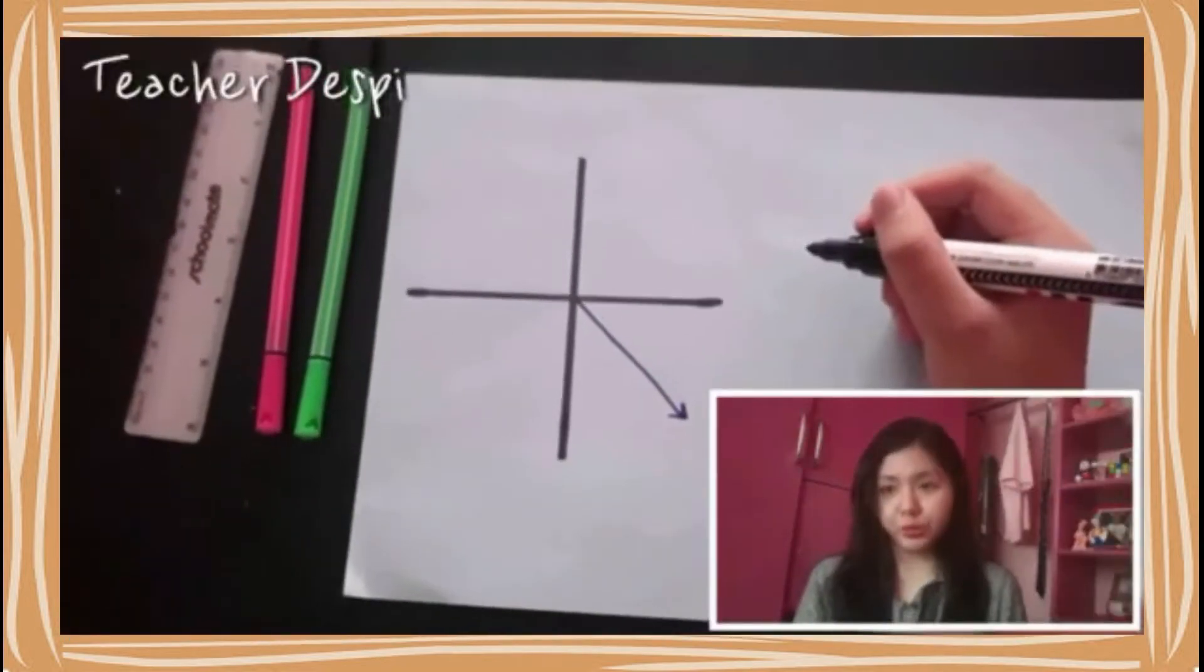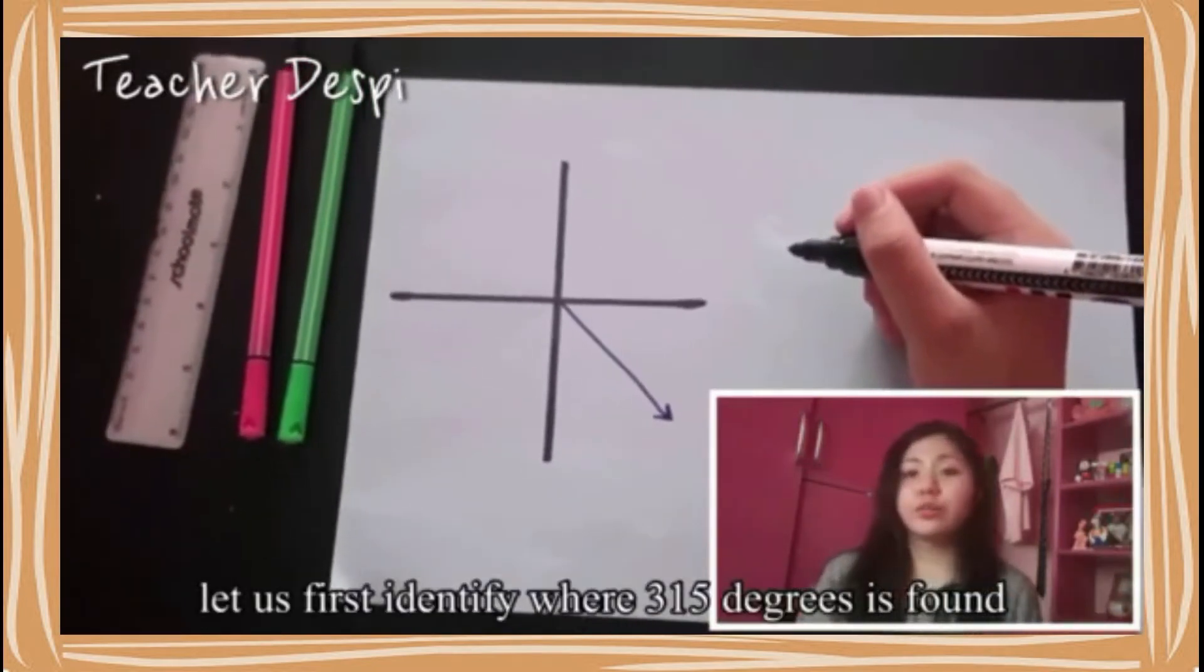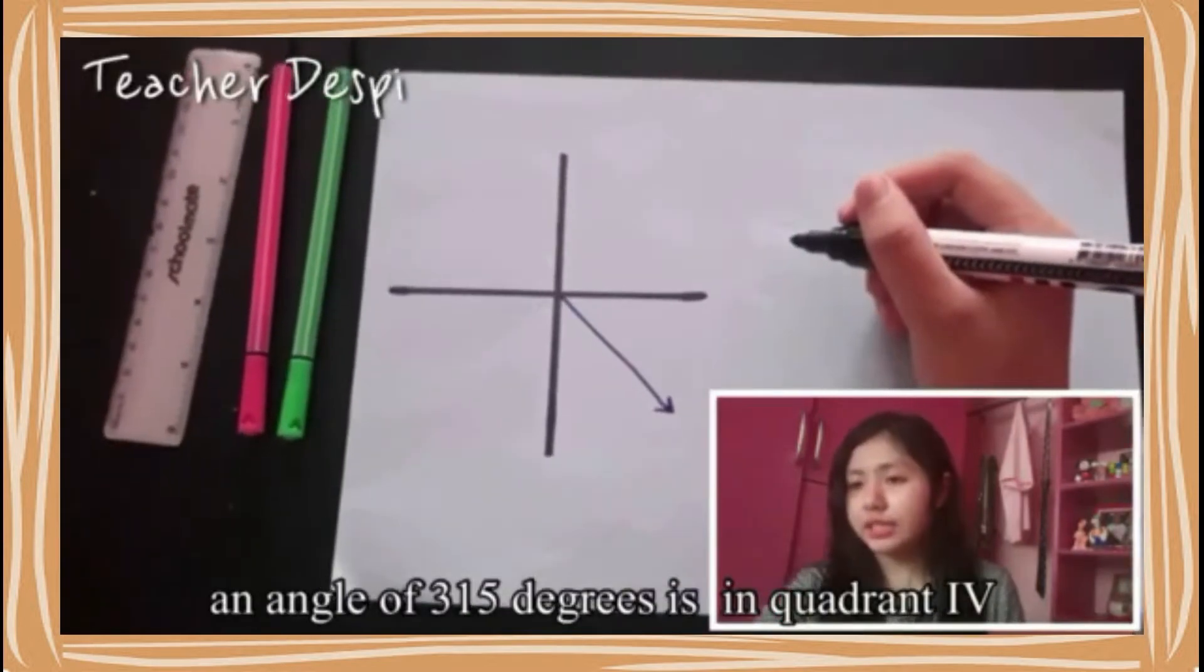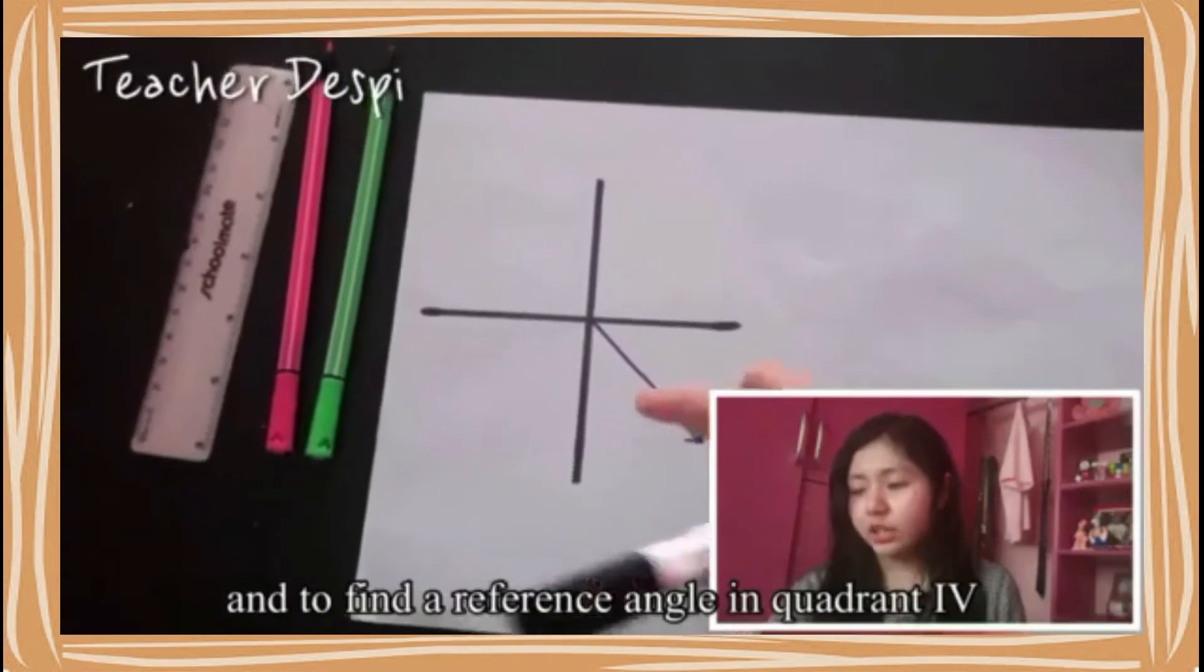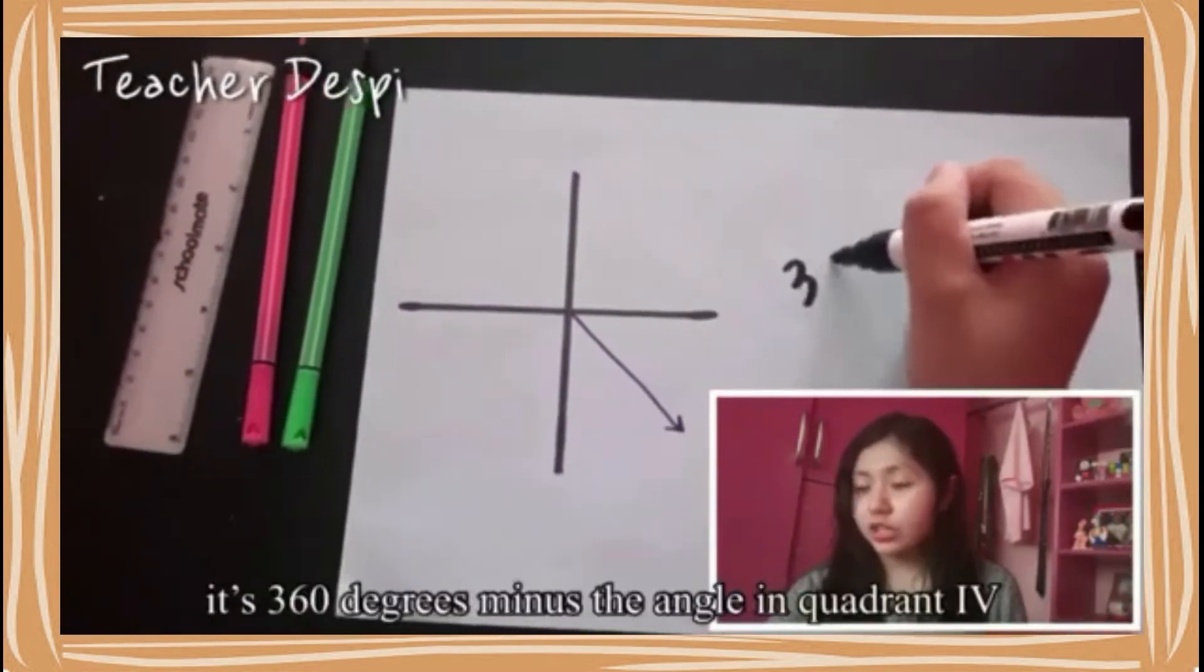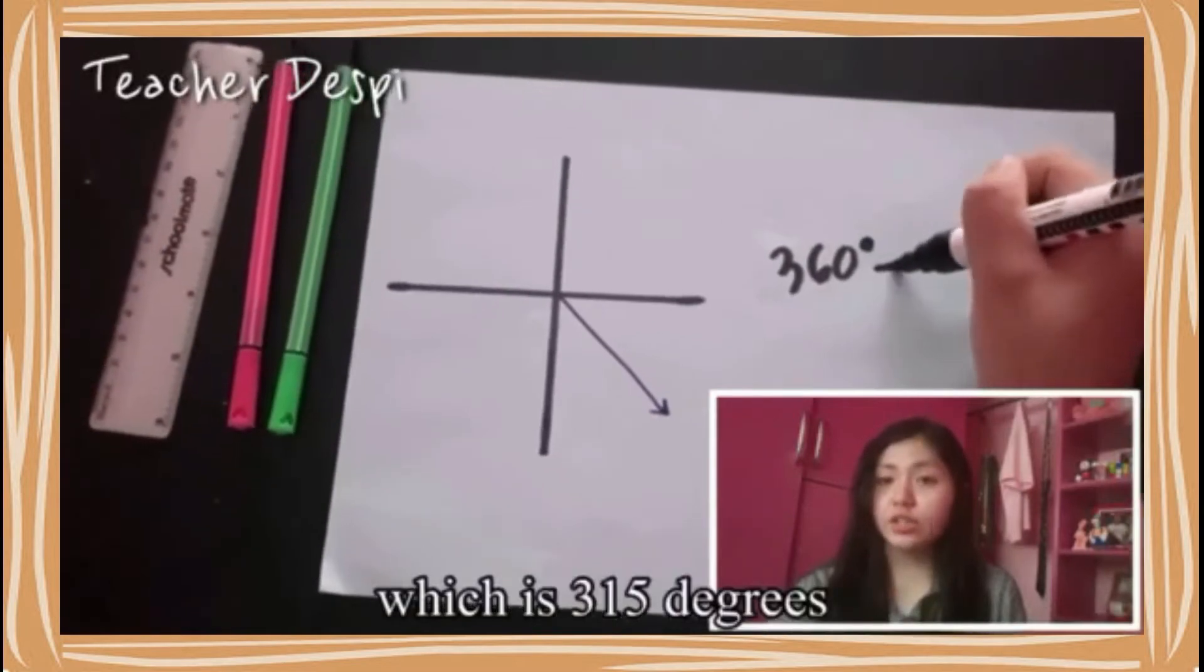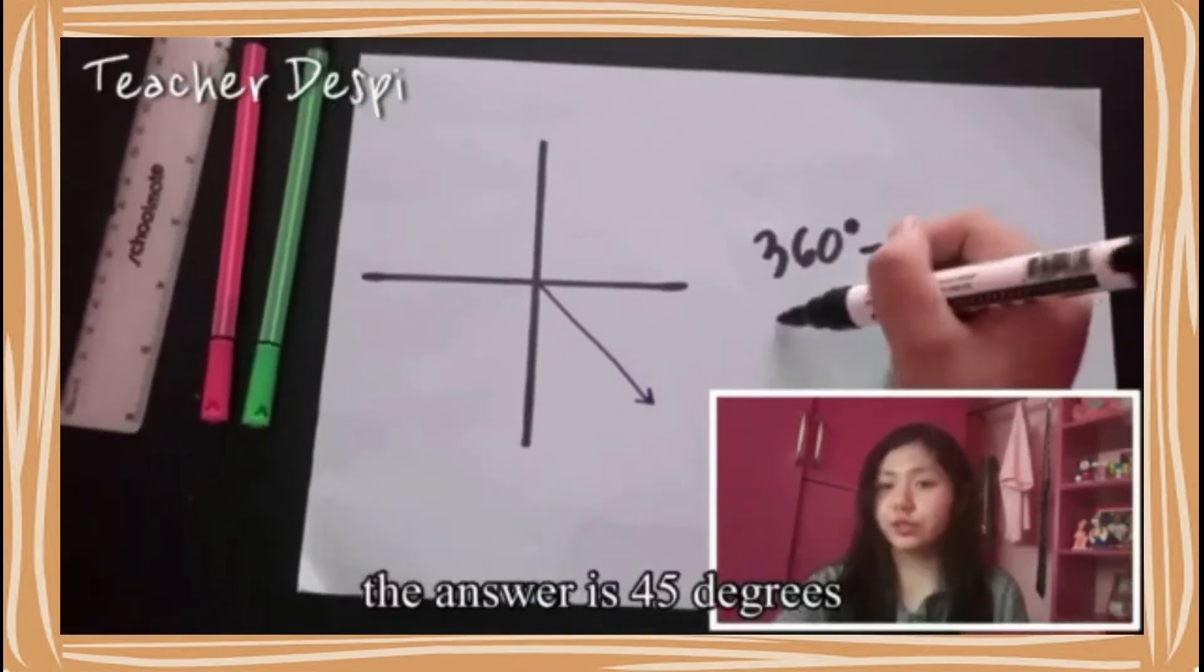Find the reference angle for 315 degrees. To find the answer, let us first identify where 315 degrees is found. An angle of 315 degrees is in quadrant 4. To find our reference angle in quadrant 4, it's 360 minus the angle in quadrant 4, which is 315 degrees. The answer is 45 degrees.